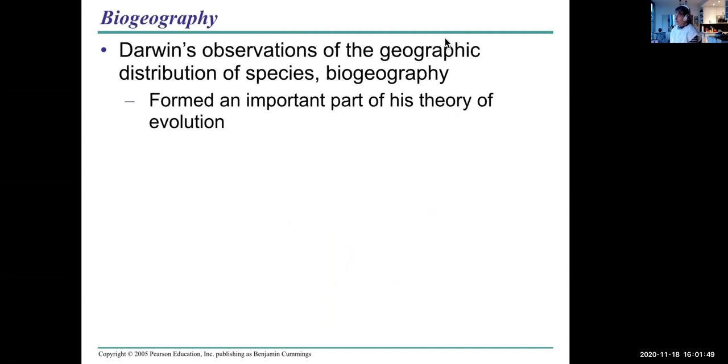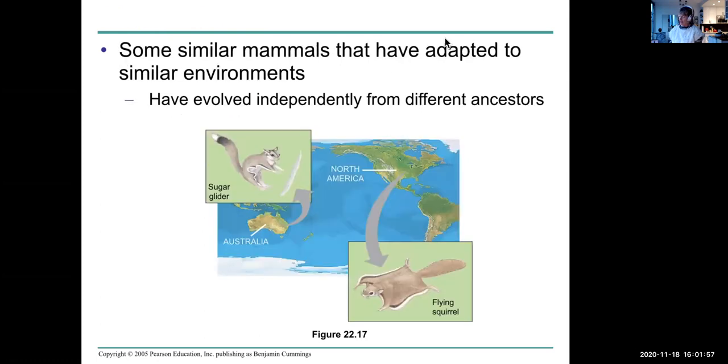So Darwin observed also that the geographic distribution of species or biogeography formed an important part of the theory of evolution. And so even though organisms may have evolved independently from different ancestors, they have evolved very similar structures because of the pressure of natural selection.